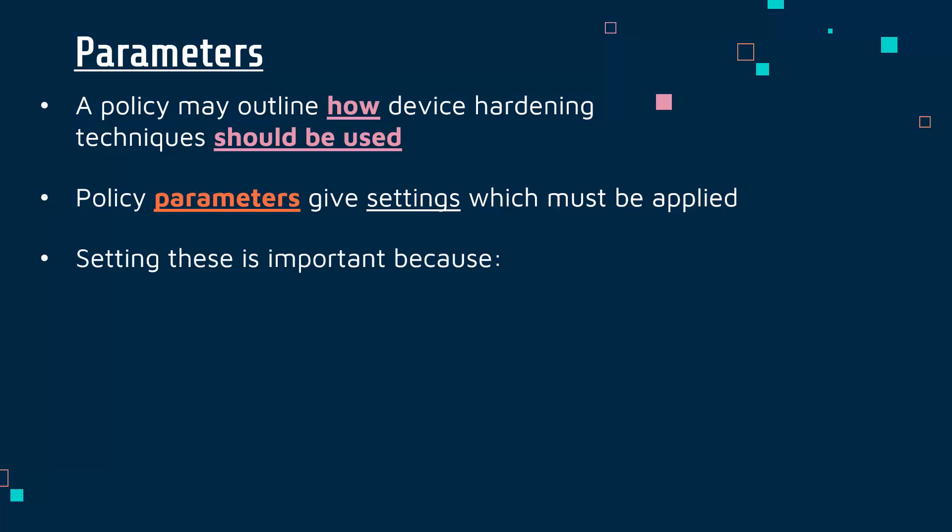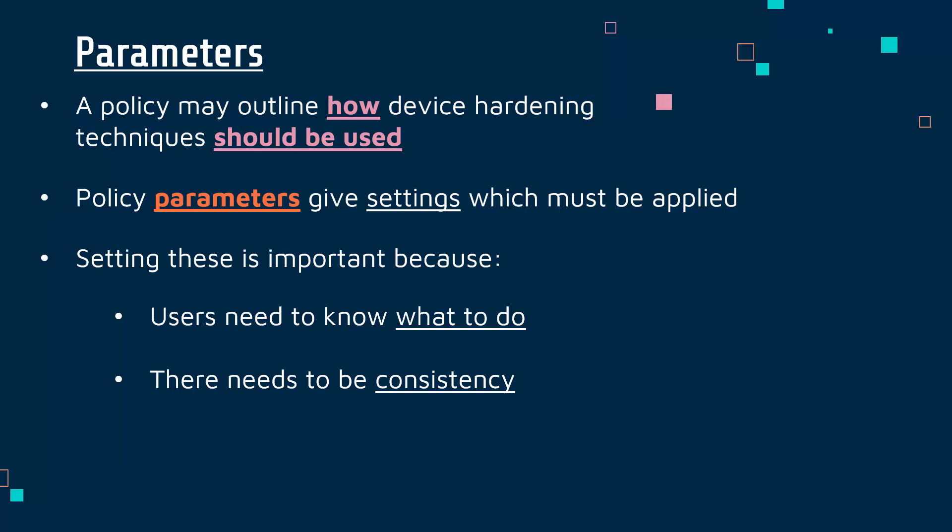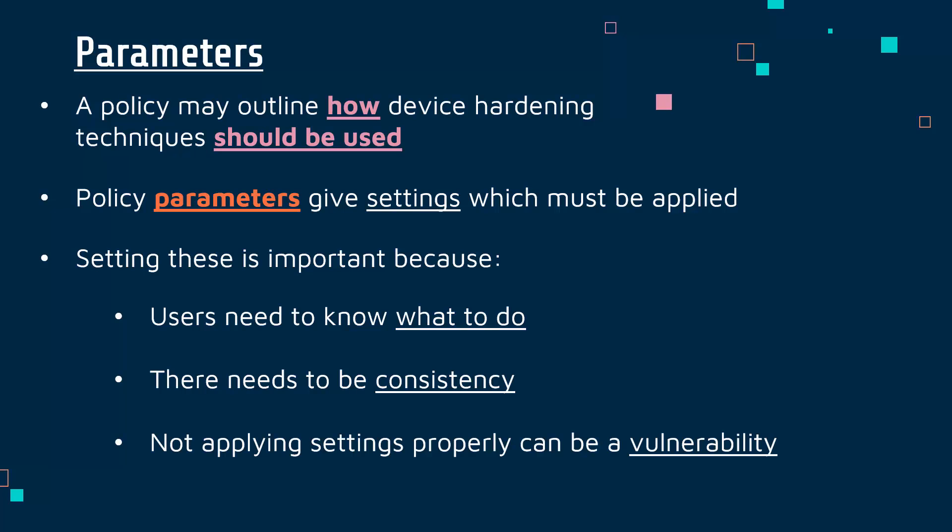Why is it important to set particular parameters in your policies? Users need to know what to do. You might have a non-specialist with antivirus software on their computer who needs to know what settings to apply. There needs to be consistency — if one person uses a technique one way and another uses it differently, it creates weaknesses in your overall security. If you're not applying settings properly, that can be a vulnerability in itself. Someone might disable a firewall or change a setting that makes it much weaker.